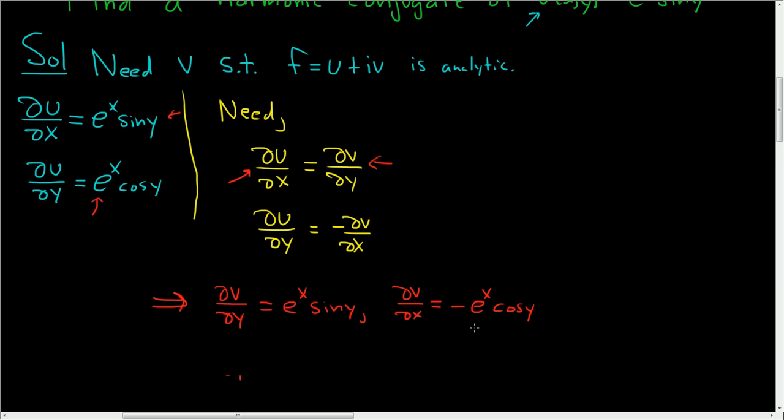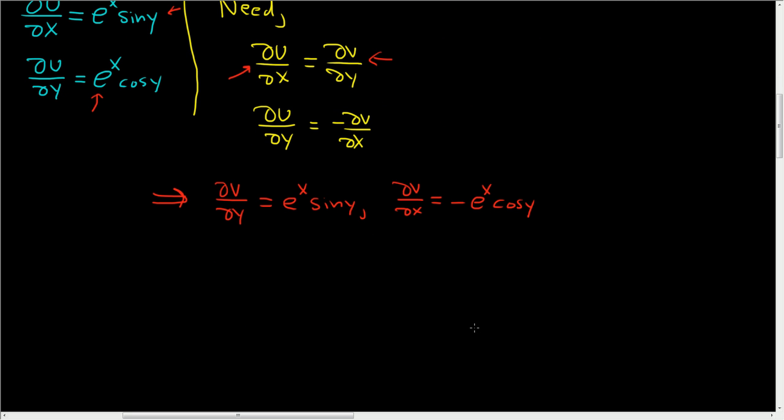Now we're going to use these two partial derivatives to find the unknown function v. You basically pick any one you like. Let's take this one and integrate. Here we have the partial of v with respect to y, so we're going to integrate with respect to y.